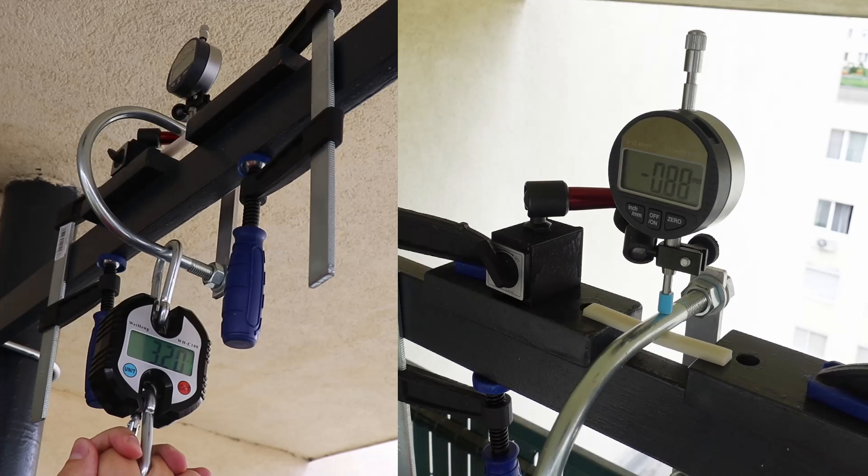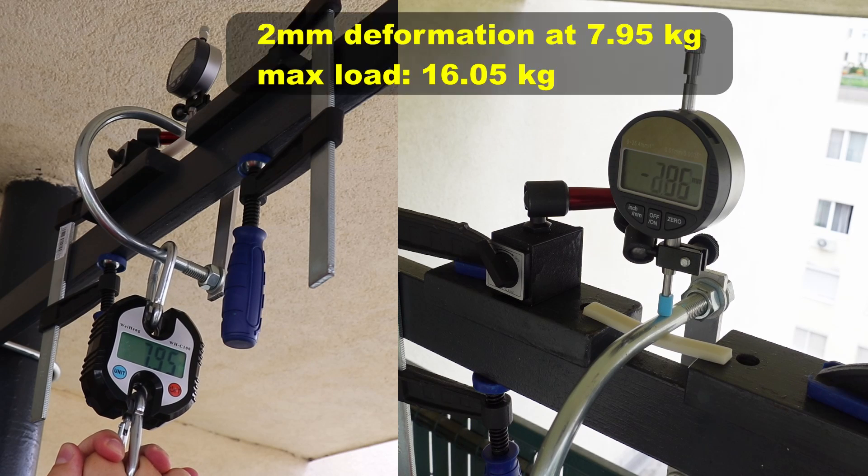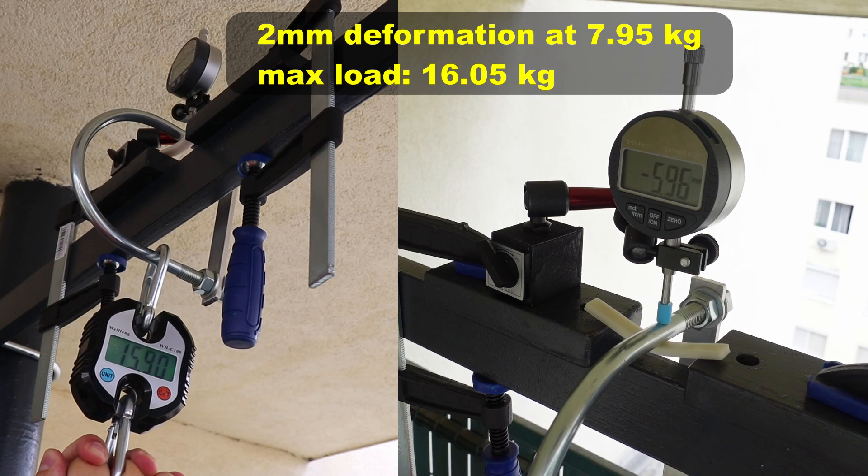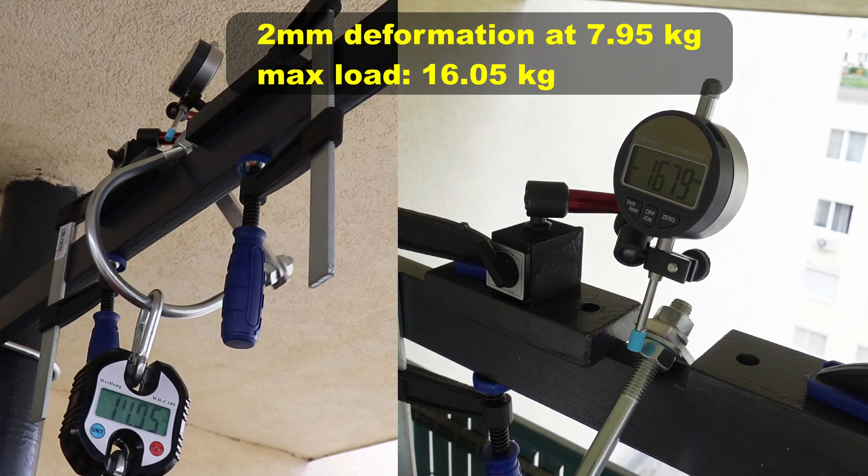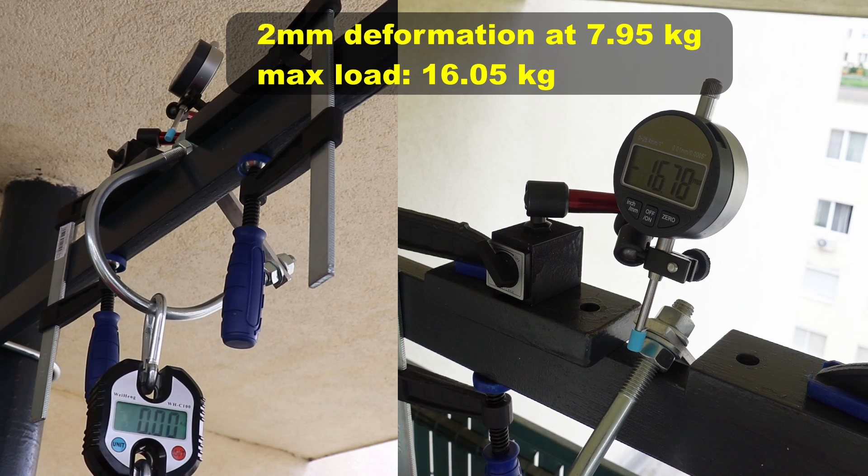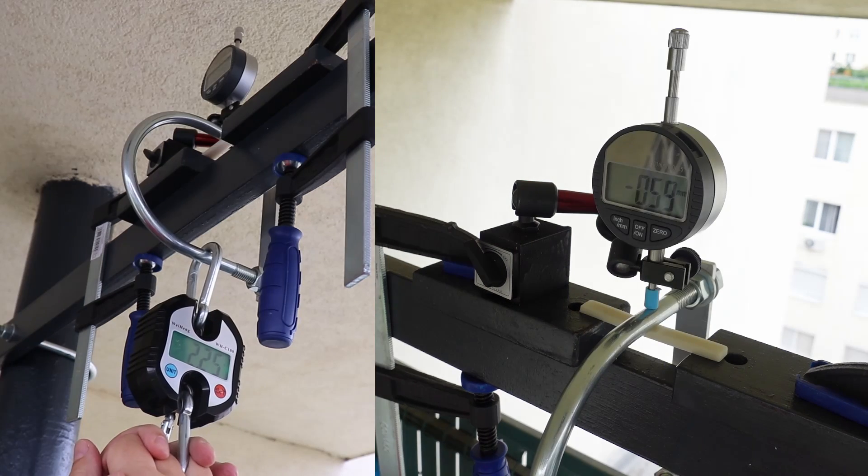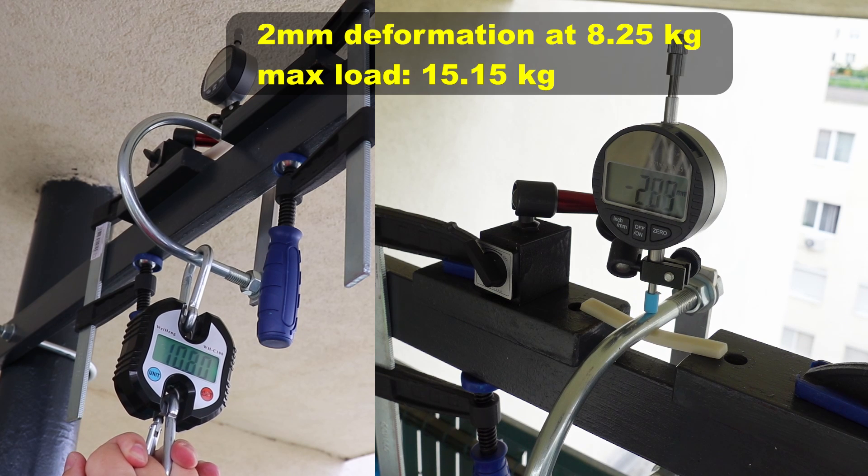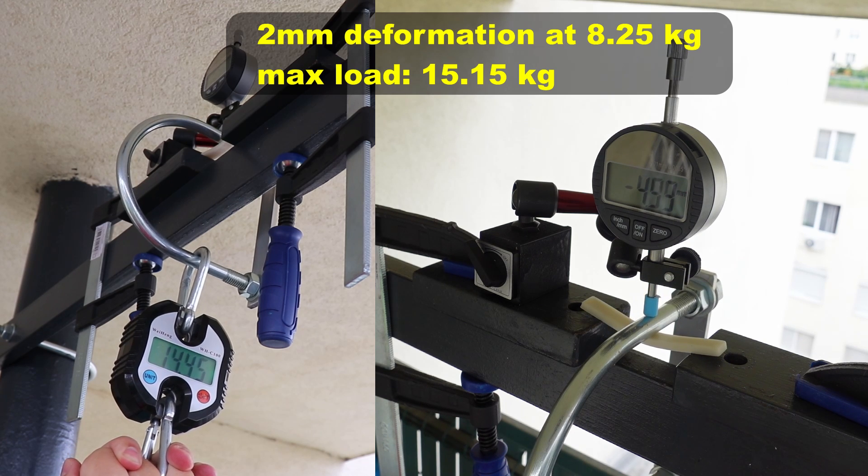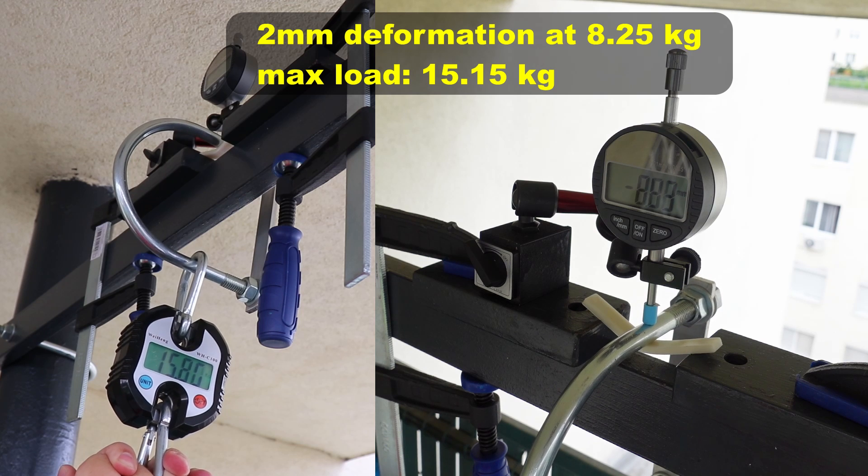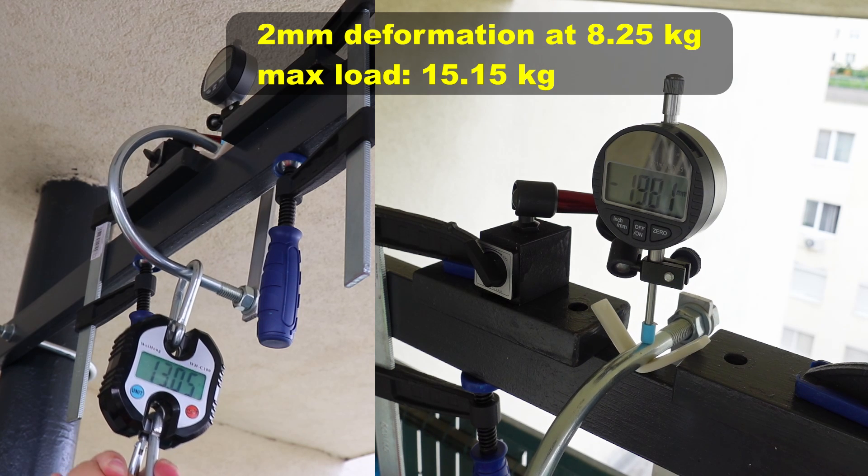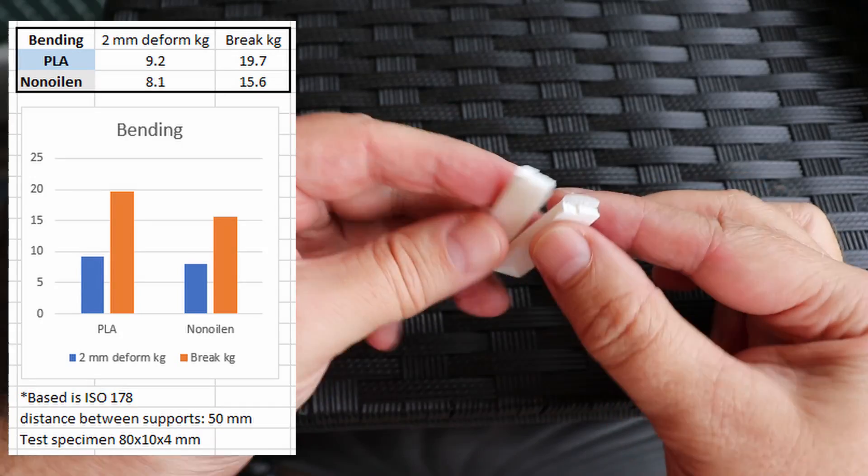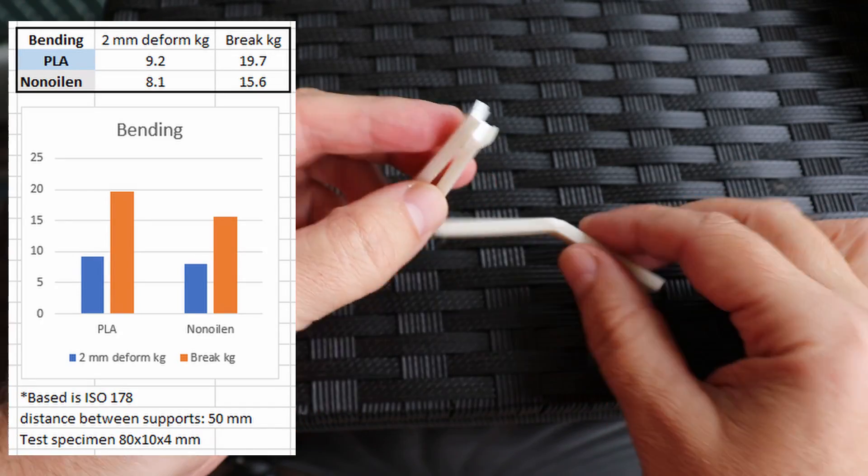The next experiment was the bending test based on ISO 179, distance between supports 15 millimeters. And in first test the test specimen broke, but in second one it just deformed without break. But the values for two millimeter deformation and the maximum load were similar. And here you can see the results compared with regular PLA.